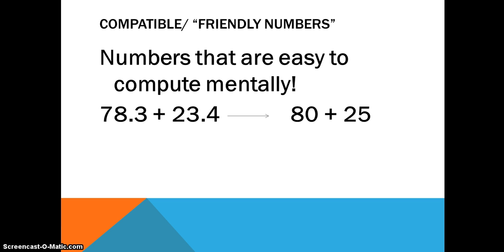23 and 4 tenths is easily made into 25. It's very close to 25 and 25 is a multiple of 5. I can easily add 80 plus 25 mentally.